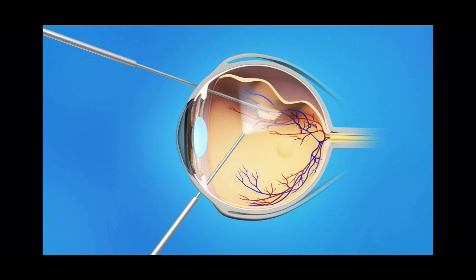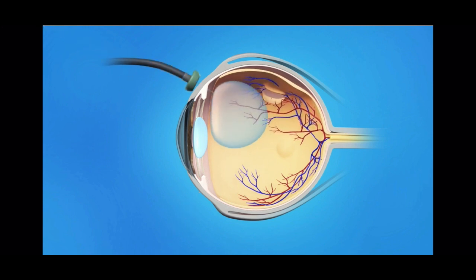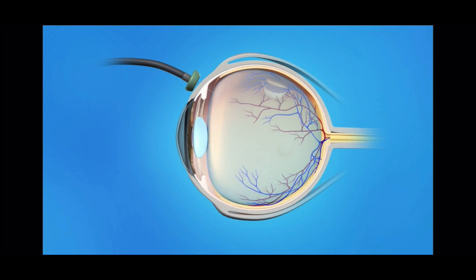Retinal detachment is operated by a procedure called vitrectomy. The vitreous inside the eye is removed with a cutter. Oil or gas is injected and the retina is settled.